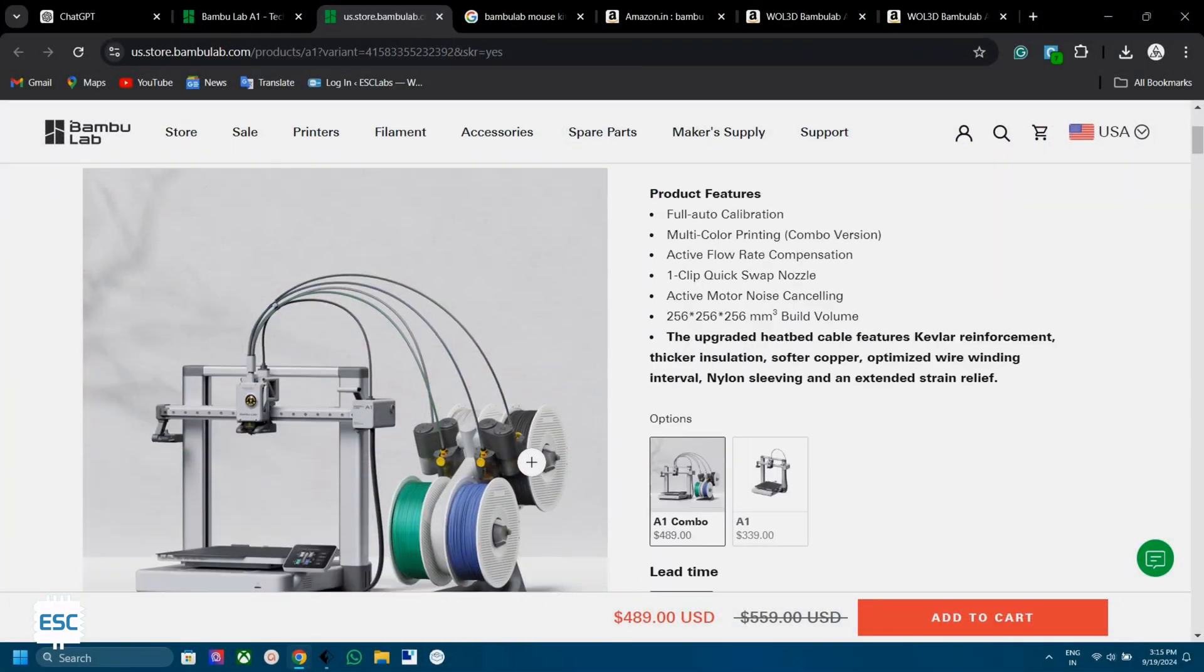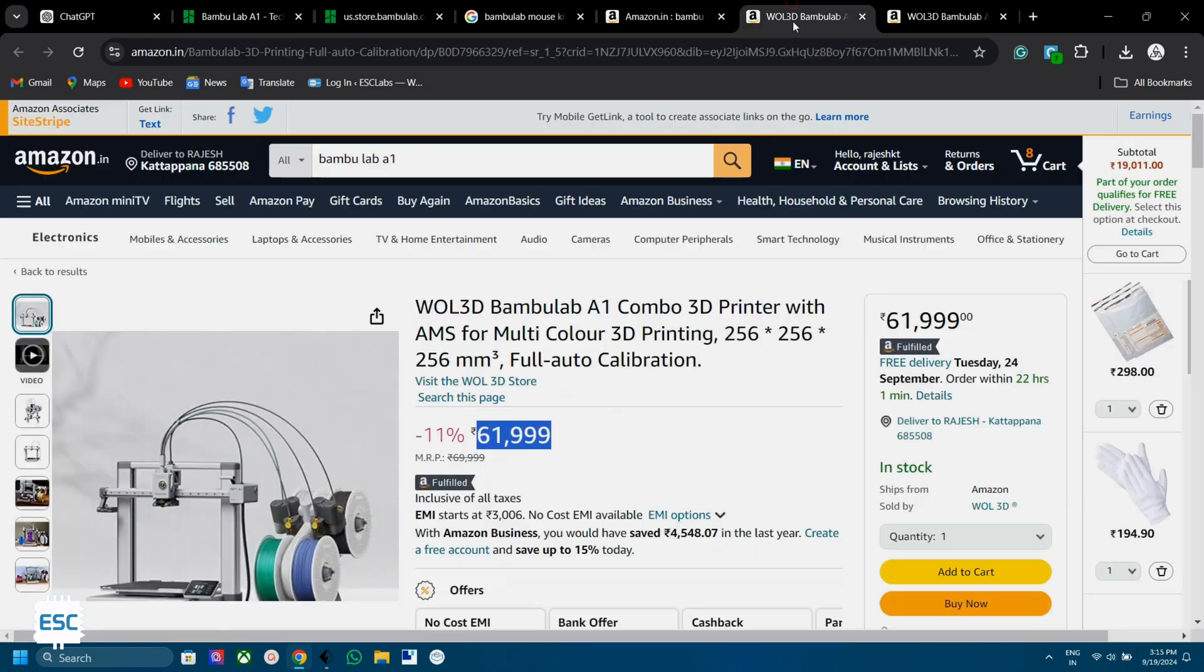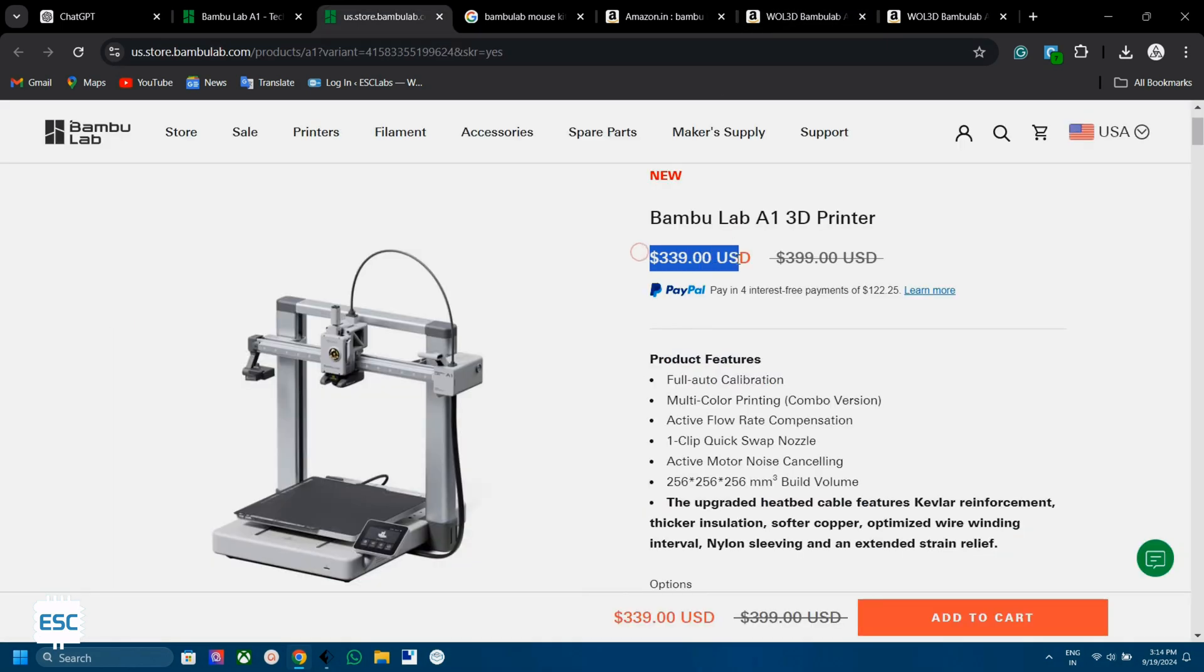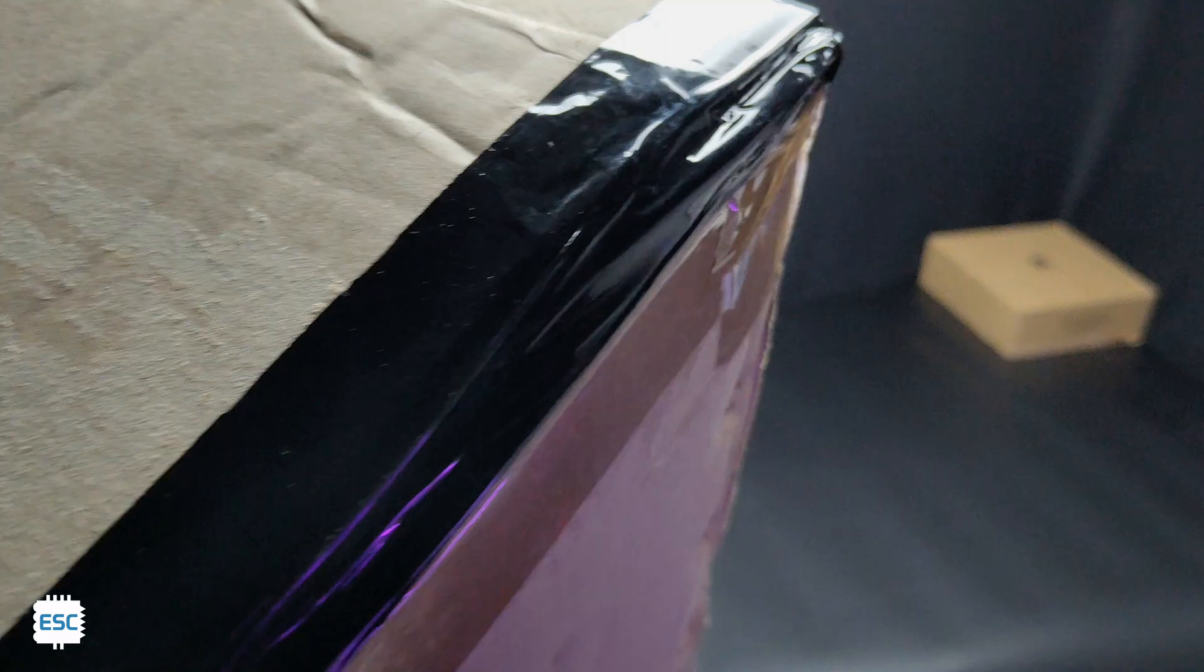The price of Bambu Lab A1 is about $489 in the official Bambu store and about 62,000 rupees in Amazon India. You can also buy without the AMS which costs around $339 in Bambu store and 44,000 rupees in Amazon India.